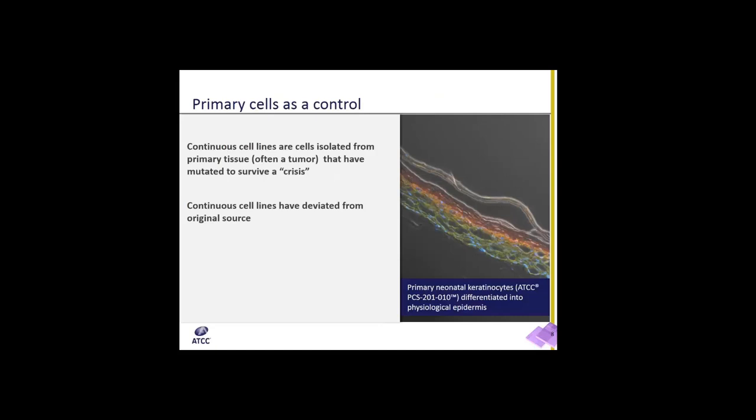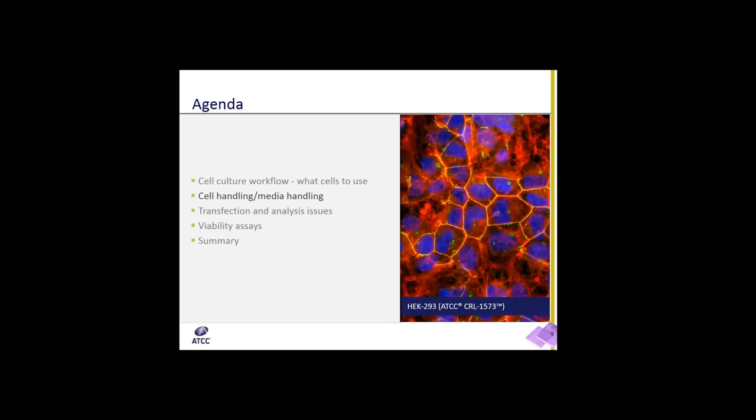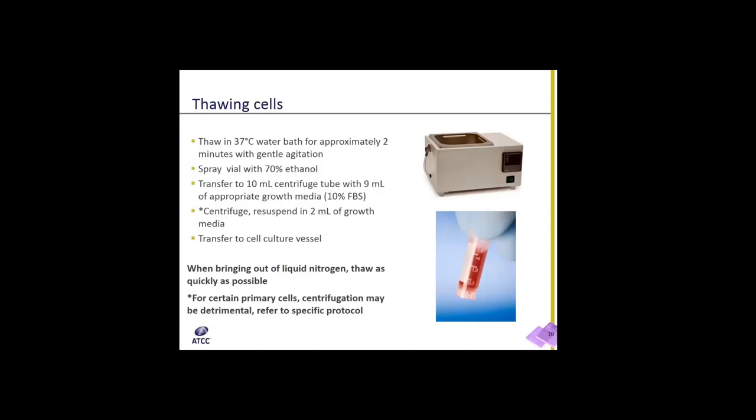A final note about experimental design. Continuous cell lines are derived from a tumor and can be in culture for a very long time, so they may have deviated from the original source. Therefore, in every experiment using a continuous cell line, you should run the appropriate primary cell as a control, since primary cells are isolated directly from primary normal tissue. Now I will turn the agenda over to Steve, who will discuss the best practices for cell handling.